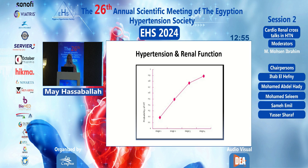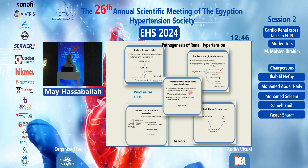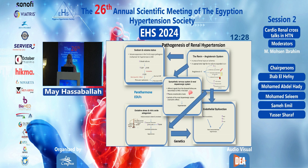Hypertension is present in up to 85–95% of patients in CKD stages three to five. Its pathogenesis involves many factors including the renin-angiotensin system, sodium and volume status, sympathetic nervous system, renal dopaminergic system, oxidative stress, and endothelial dysfunction — not to mention genetic factors. The renin-angiotensin system affects all other factors, highlighting how critically important it is.